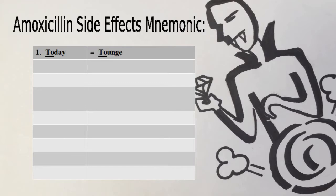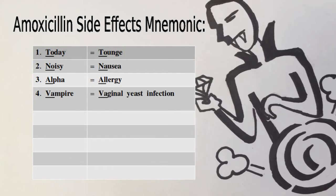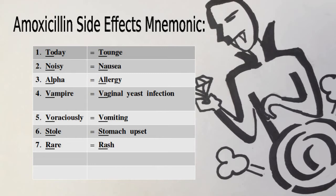The word 'Today' equates to 'tongue,' meaning the side effect hairy tongue. 'Noisy' reminds us of nausea. 'Alpha' represents allergy. 'Vampire' makes vivid the side effect vaginal yeast infection. 'Voraciously' characterizes vomiting. 'Stole' is for stomach upset. 'Rare' stands for skin rash. 'Heart' portrays headache. And the last word, 'Diamond,' epitomizes diarrhea.